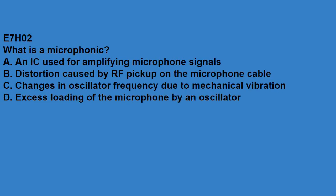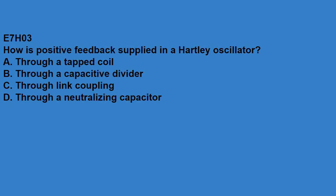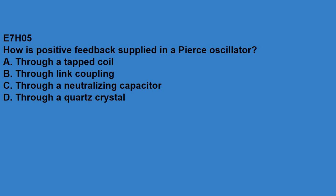E7H02, what is microphonics? Changes in oscillator frequency due to mechanical vibration. E7H03, how is positive feedback supplied to a Hartley oscillator? Through a tapped coil. E7H04, how is positive feedback supplied in a Colpitts oscillator? Through a capacitive divider. E7H05, how is positive feedback supplied in a Pierce oscillator? Through a quartz crystal.